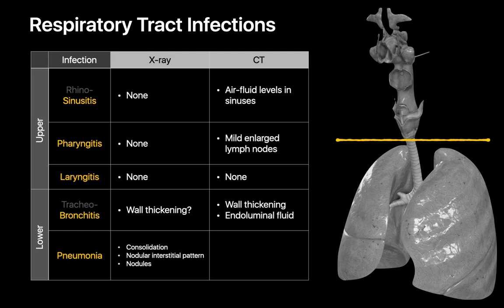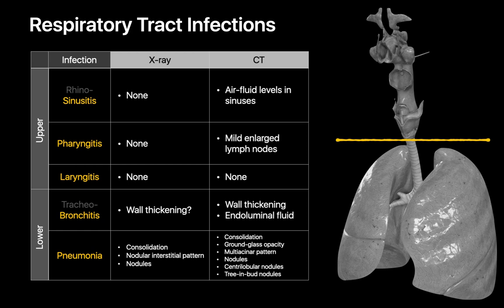With pneumonia, possible chest x-ray findings may include consolidation, a nodular interstitial pattern, or lung nodules. On chest CT, pneumonias may present with consolidation, ground-glass opacities, a multi-acinar bronchopneumonia pattern, nodules, a centrilobular or tree-and-bud nodular interstitial pattern, or any combination of these. When symptoms and physical exam suggest an upper respiratory tract infection or bronchitis, imaging will typically not be part of the workup. However, if signs point towards pneumonia, a chest x-ray will typically be part of the workup, and in a few cases, even chest CT.